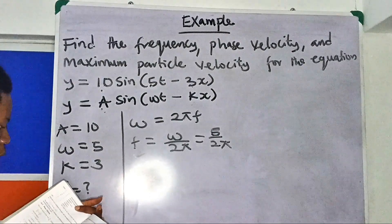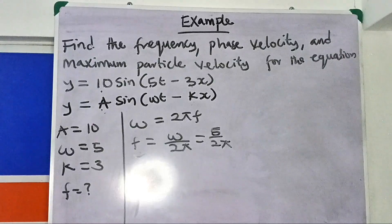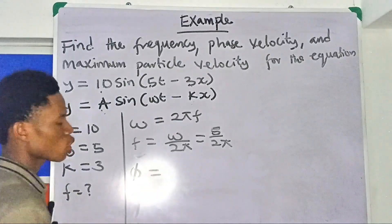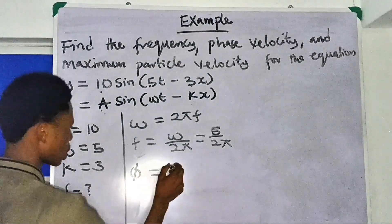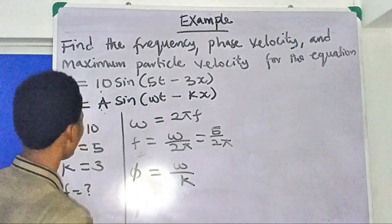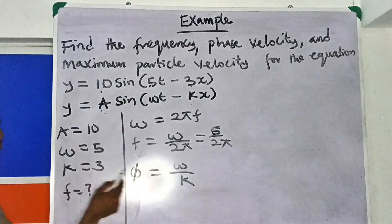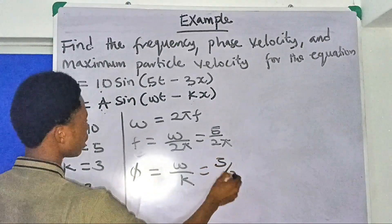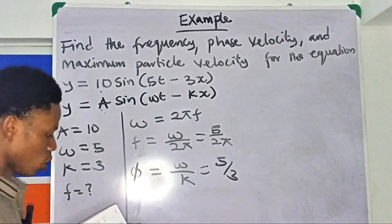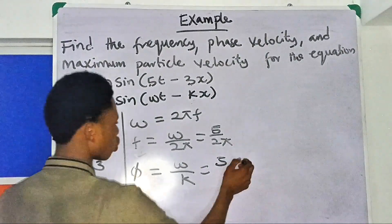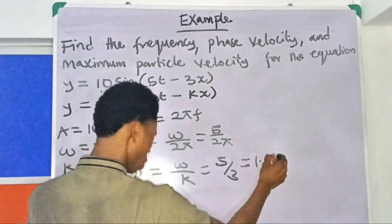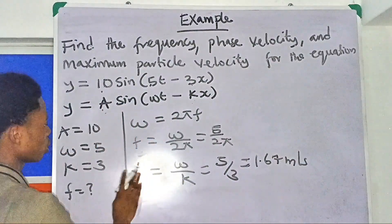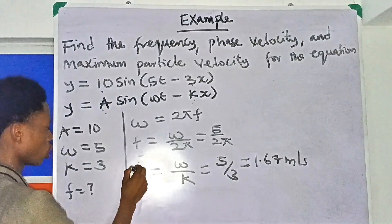Next we calculate the phase velocity. Phase velocity = ω/k. We have ω = 5 and k = 3, so phase velocity = 5/3 ≈ 1.67 meters per second.